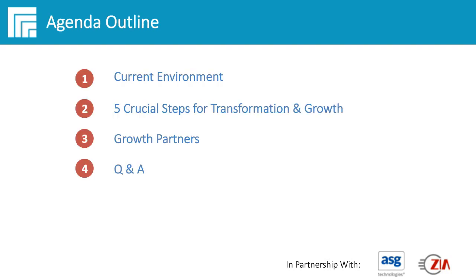We're going to talk about the current environment of what we see — very prevalent, especially within 2020 and how document processing has evolved with a more remote workspace. Then we're going to talk about five crucial steps for transformation and growth. There will be an insurance flavor to some of these case studies and examples, but the problems you'll see around transformation and growth can apply to almost any vertical. Feel free to ask questions, whether pertaining to insurance or your own industry.